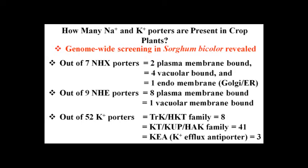In the present work, we performed genome-wide screening in sorghum, mining data on potassium transporters and sodium transporters. We identified seven NHX sodium-proton antiporters and nine NHE — sodium-proton exchangers — in sorghum. NHX is the plant nomenclature; NHE is the animal equivalent; both perform similar functions. Of the seven NHX transporters, two are plasma membrane-bound, four are vacuolar-bound, and one is endomembrane. Of the nine NHE, eight are localized in the plasma membrane and one in the vacuolar membrane.